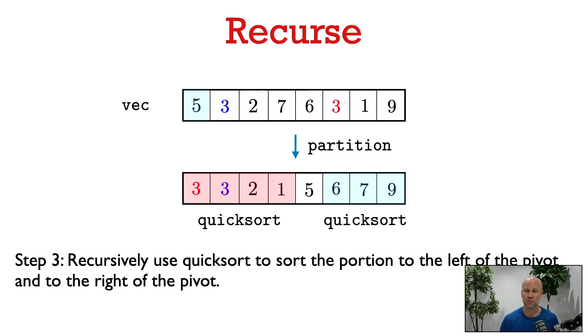We choose a pivot, partition on that pivot, and then recursively call QuickSort on the portion of the vector to the left of the pivot and the portion to the right. This is the entire QuickSort algorithm.